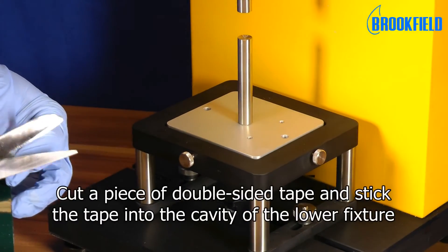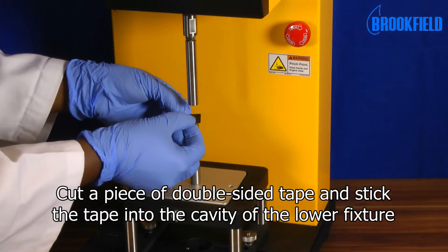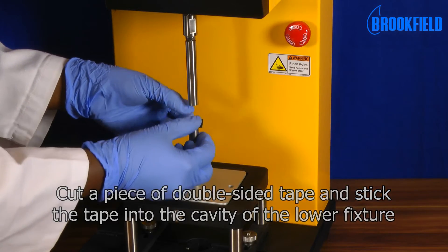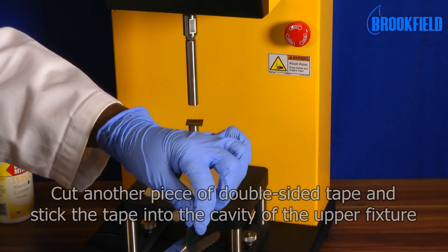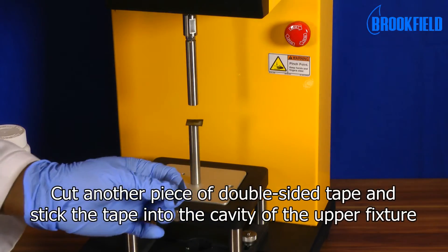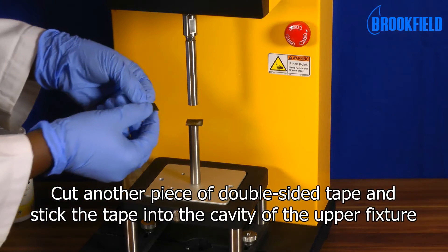Cut a piece of double-sided tape and stick the tape into the cavity of the lower fixture. Cut another piece of double-sided tape and stick the tape onto the cavity of the upper fixture.